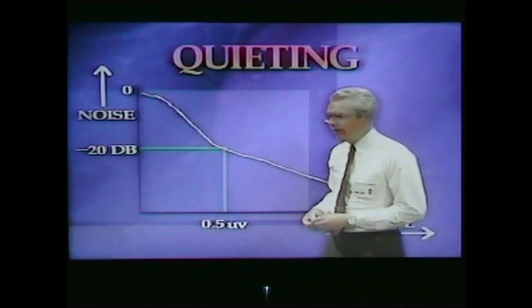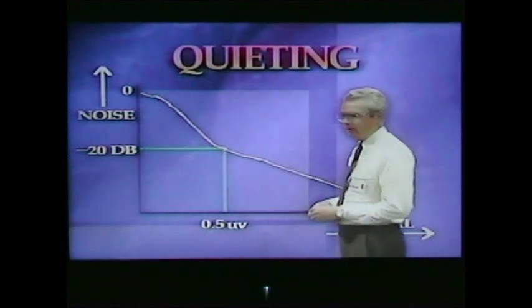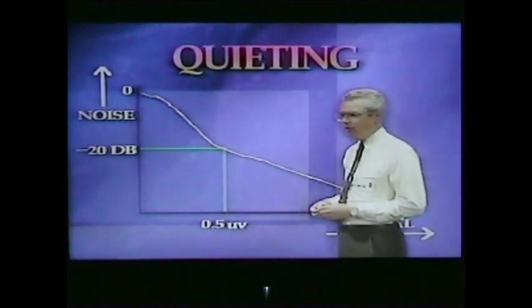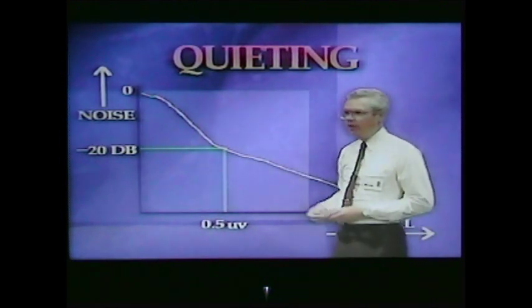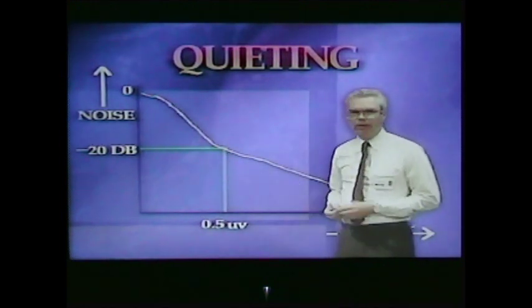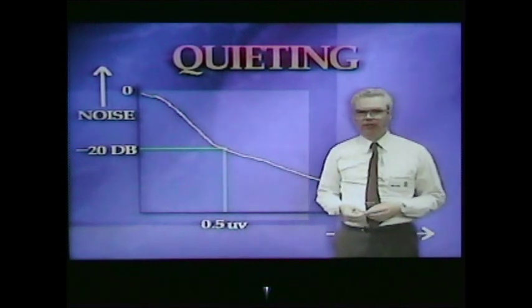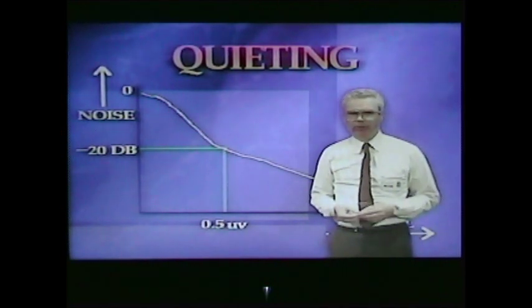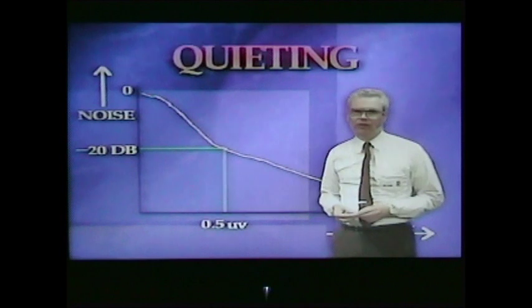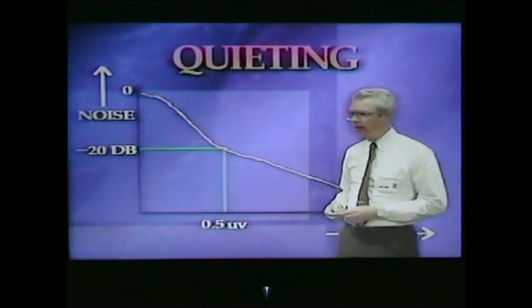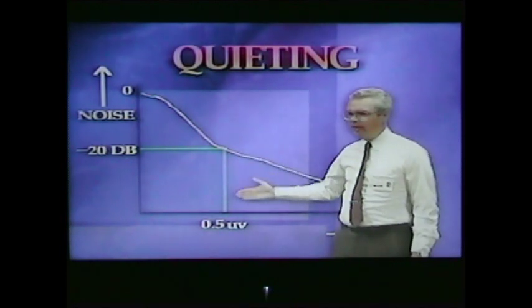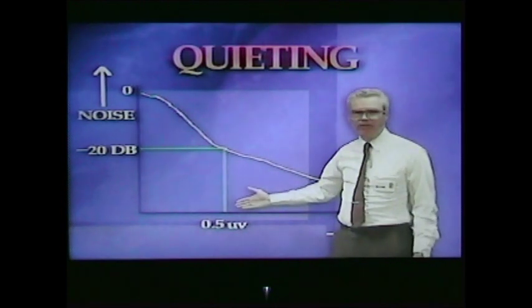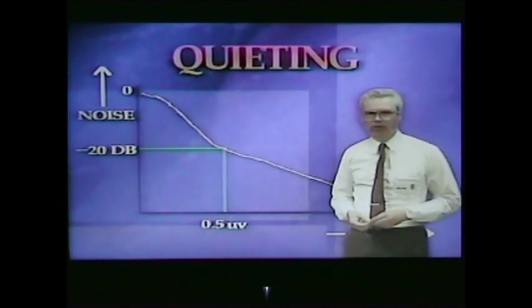There's a certain point on this quieting characteristic that is of special interest to us — where the noise quiets down by 20 dB from the no-signal value. This 20 dB quieting point is often used to check the sensitivity of the receiver, and the amount of signal strength necessary to produce this 20 dB of quieting is measured with a calibrated signal generator. Typically it requires something like a half a microvolt for 20 dB of quieting.